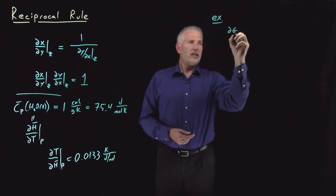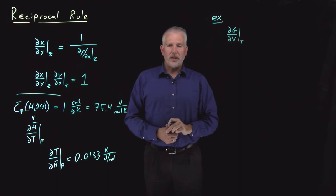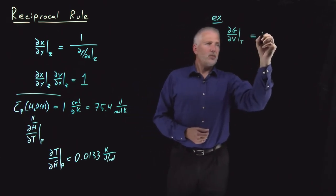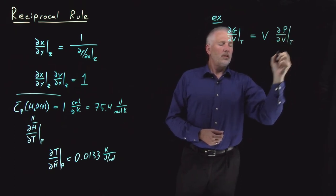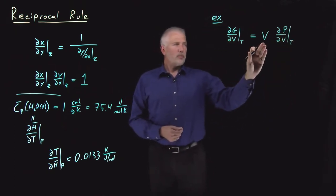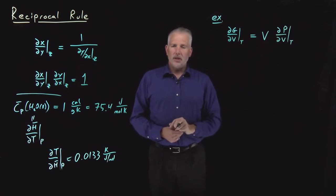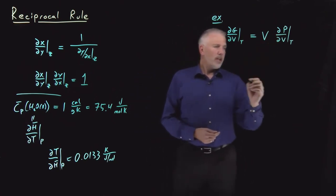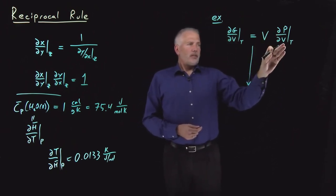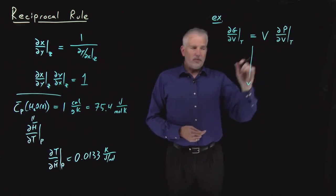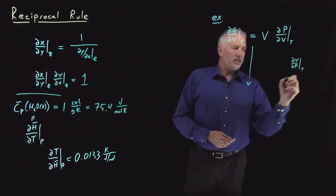We have seen already that if what we're interested in is how much the Gibbs free energy is changing as we change the volume, the chain rule has already told us that that is equal to volume times dp dv at constant t. dp dv at constant t looks a little bit familiar. That's related to... so as we make this next transformation, dp dv at constant t is not something we have a name for, but the reciprocal of it, dv dp at constant t...